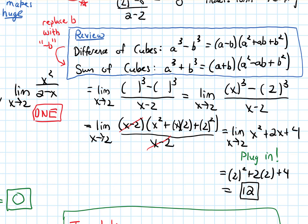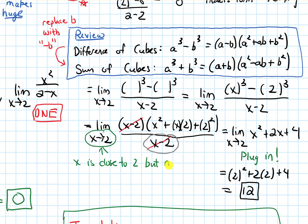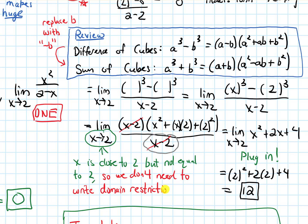One thing to remember from pre-calculus: when a factor like (x - 2) on the denominator cancels out completely, we used to write the domain restriction that x cannot equal 2. But when we do a limit where x is approaching 2, it means x is close to 2 but not equal to 2 — so we don't need to write that domain restriction. It is implied when we write this limit.